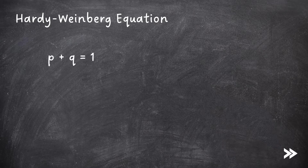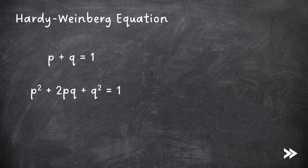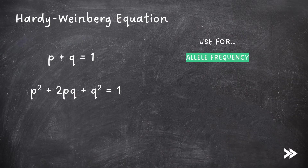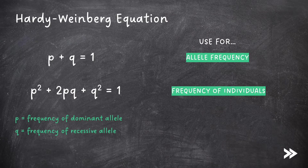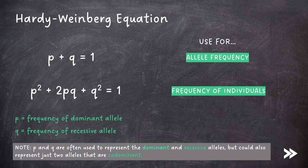The two equations are: p + q = 1, and p² + 2pq + q² = 1. We use the first equation to calculate allele frequencies, and the second equation to calculate the frequency of individuals. In these equations, p represents the frequency of the dominant allele and q the frequency of the recessive one. Note that p and q are often used to represent the dominant and recessive alleles, but could just represent two alleles that are co-dominant.